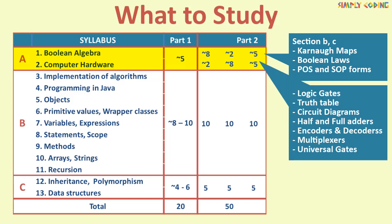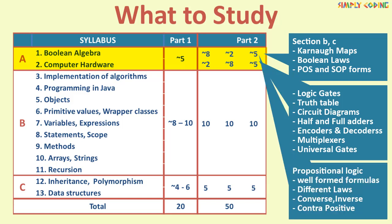Next is computer hardware. Learn first basic gates and how to make truth table and circuit diagrams as many questions are just to draw the circuit diagram of reduced expression. Next, learn about half adders, full adders, encoders, decoders, multiplexers with their diagram as there will be one question on this. Then learn about the universal gates and converting circuits to universal gates.